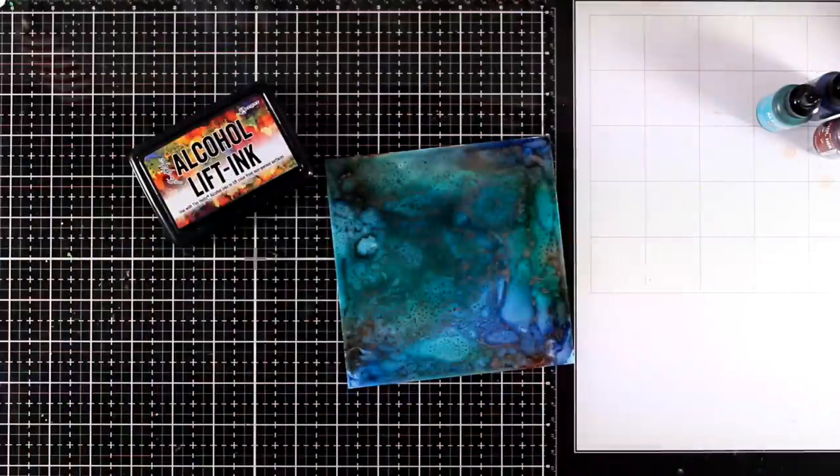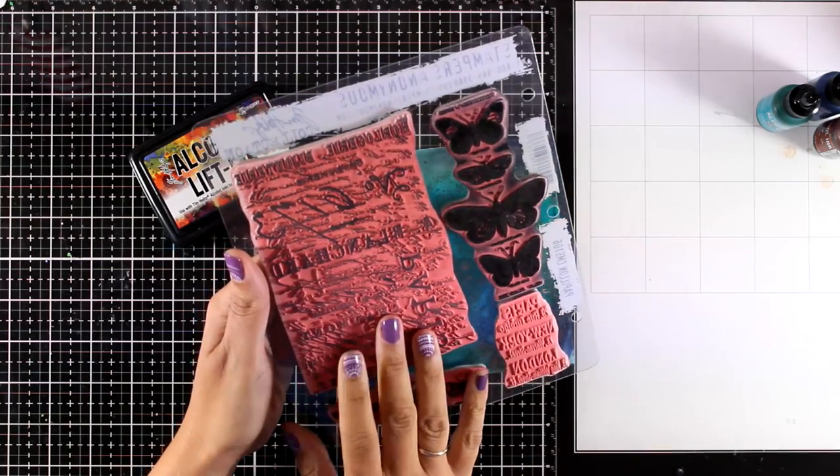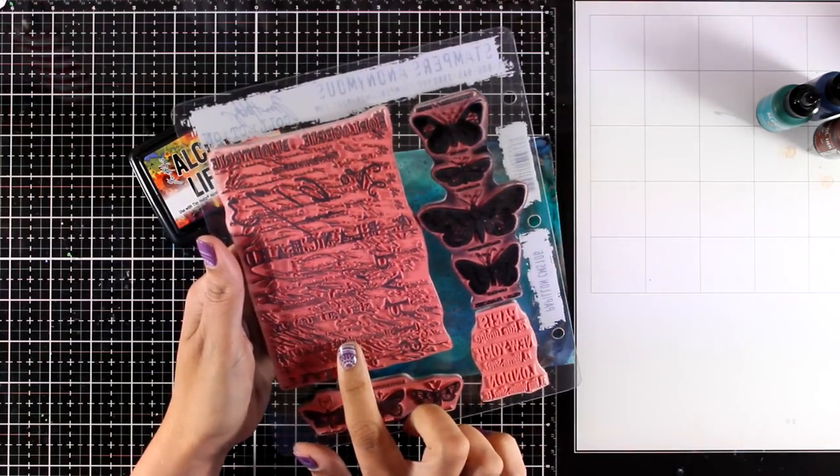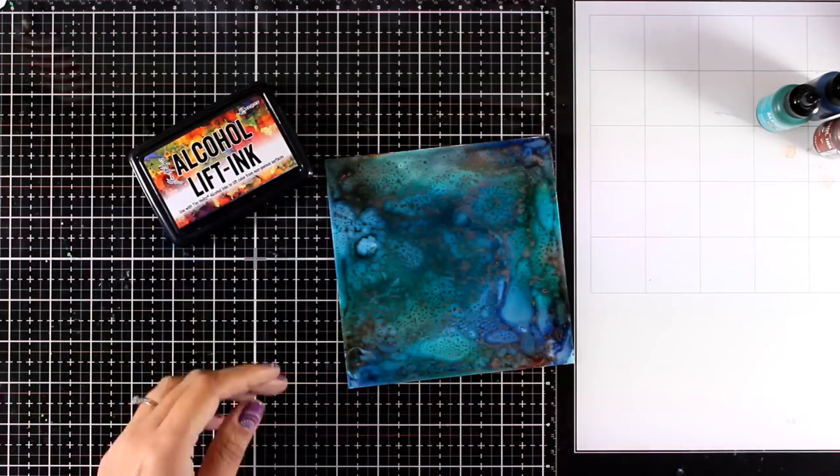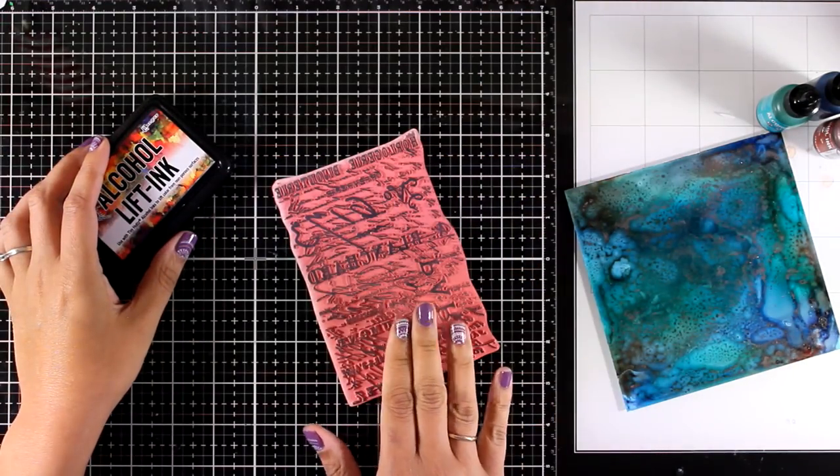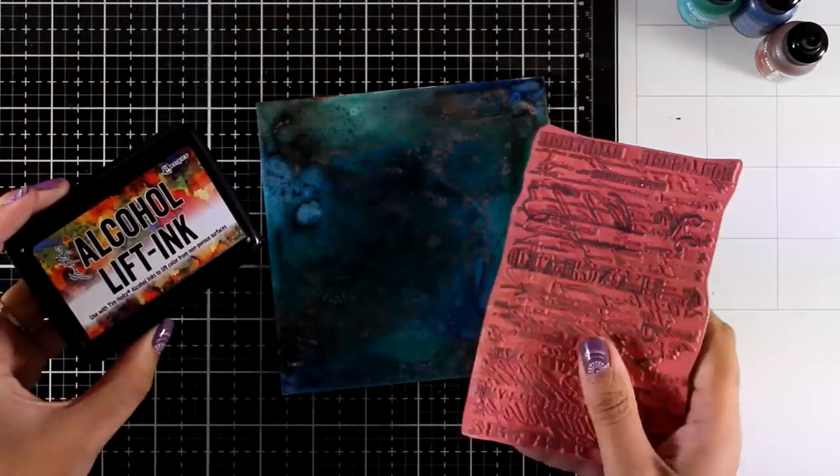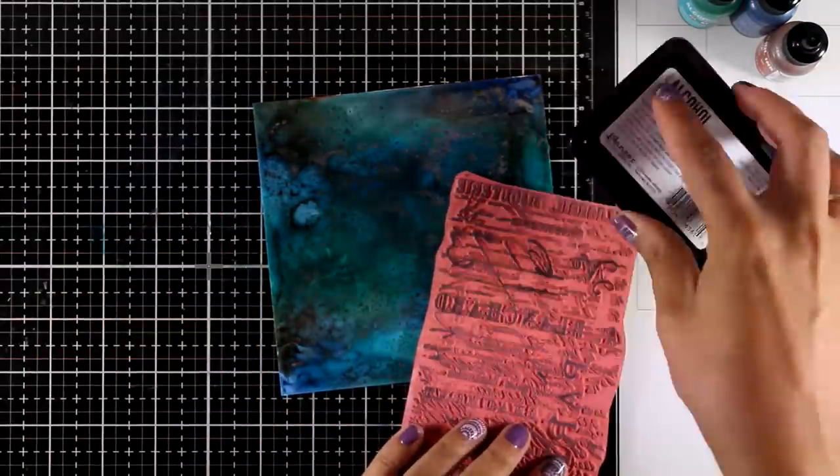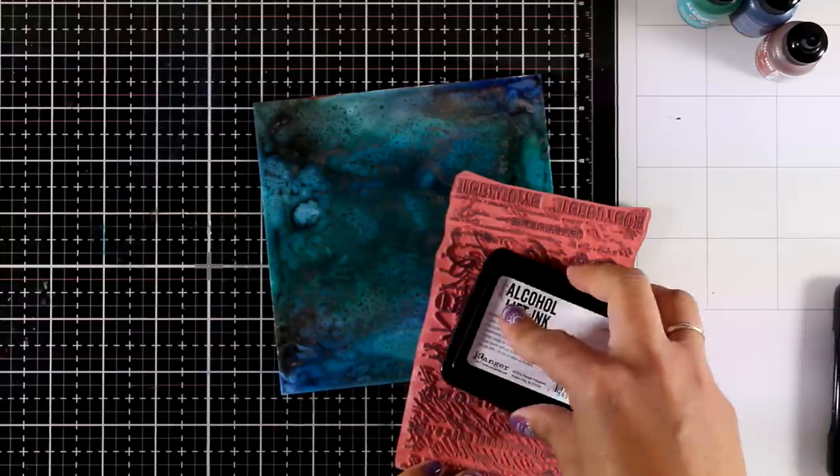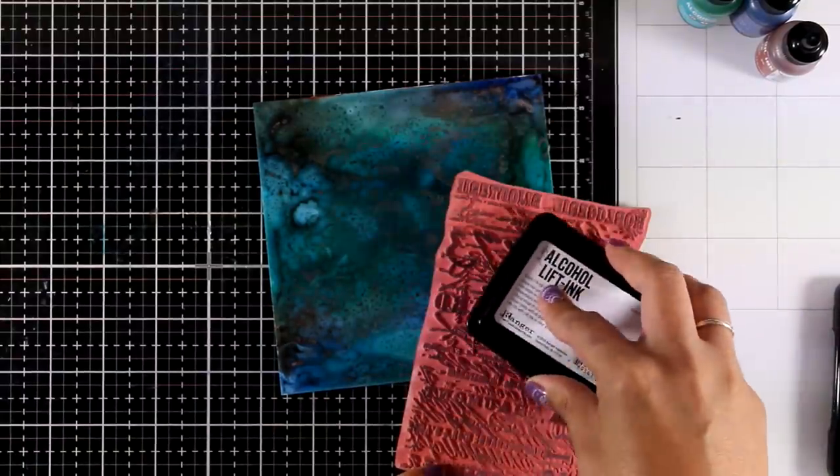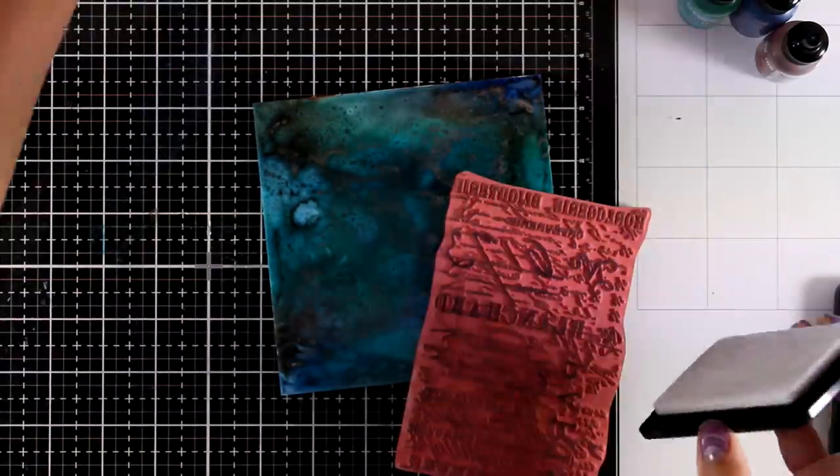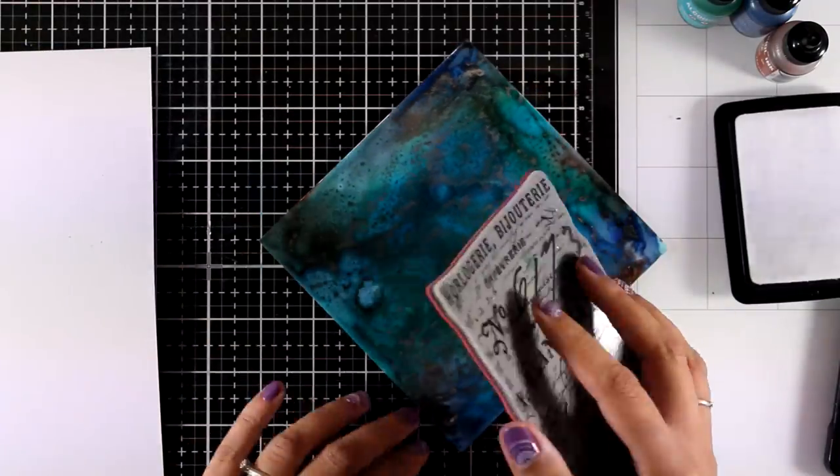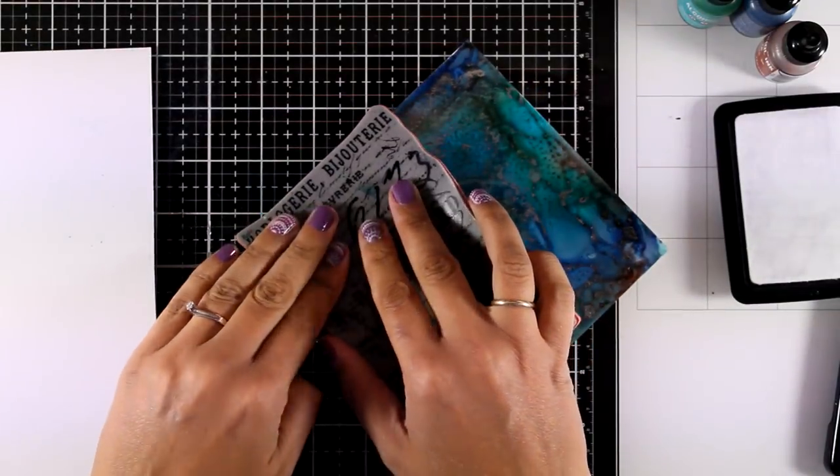And now it's time to have some fun with the alcohol lifting. For that I will be using this background stamp which has a beautiful text on top, this is from an older collection. I need to make sure that this rubber stamp is completely clean. It looks a little bit stained but I made sure that it is totally clean. Now I'm going to apply my alcohol lift ink on top, I'm going to stamp on my yupo paper.